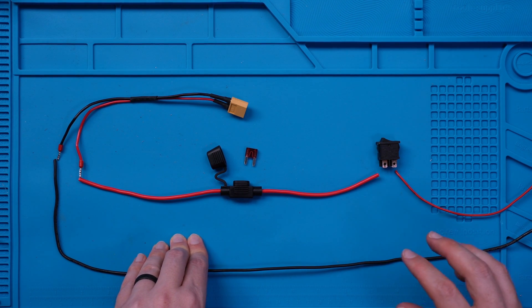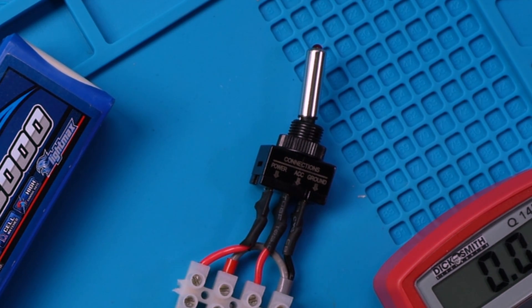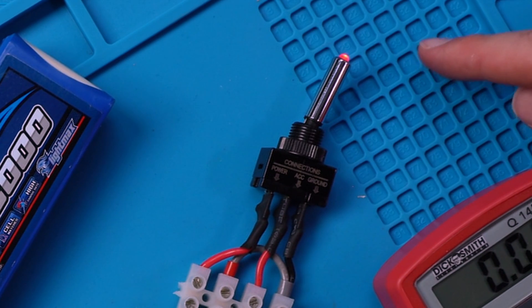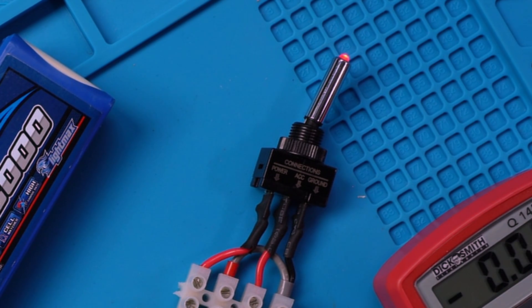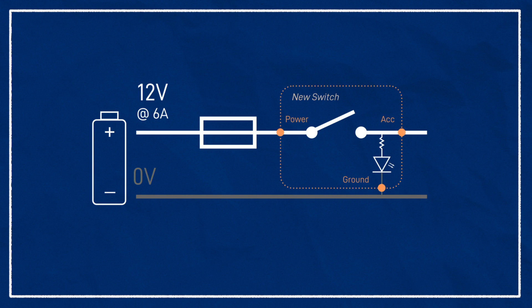Now that'll work, but I've got a slightly more complicated switch that I want to use. You can see it's got an LED on the end of the switch, which is nice to have, but in order for it to light up when the power is on, it's going to need to properly close the circuit with a connection to ground. That means our switch is going to have three pins instead of the normal two, and we'll have to make sure each one is connected correctly.